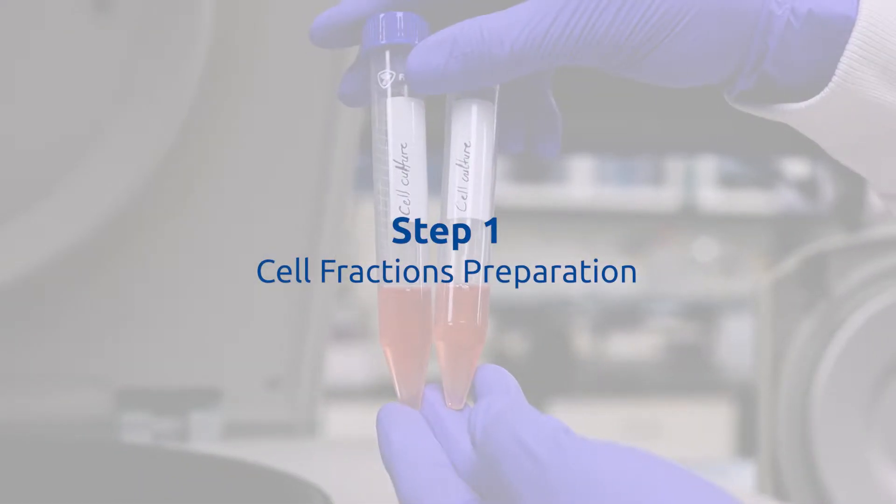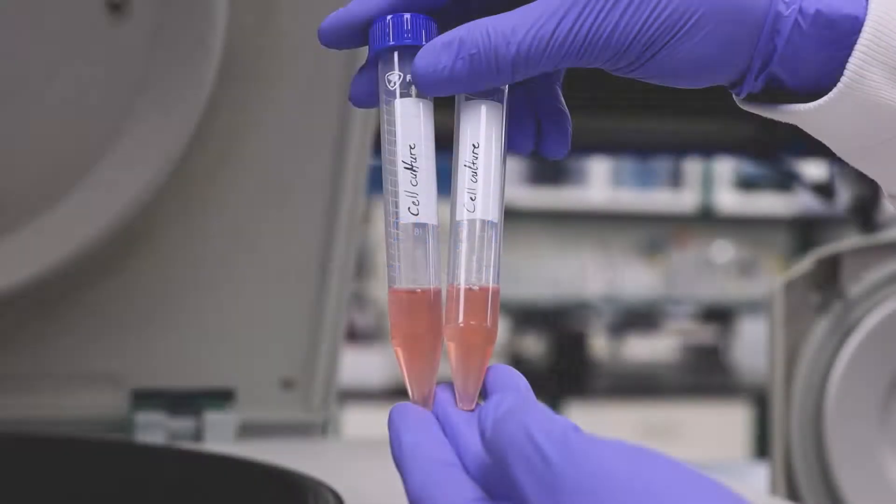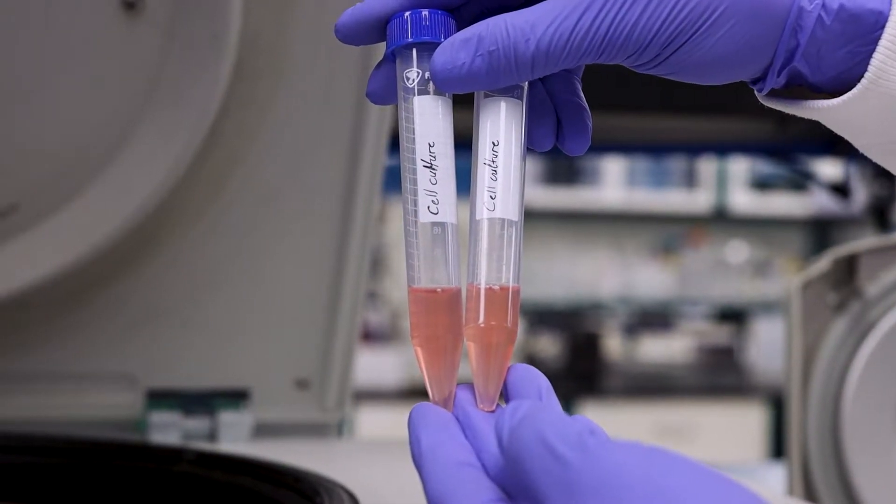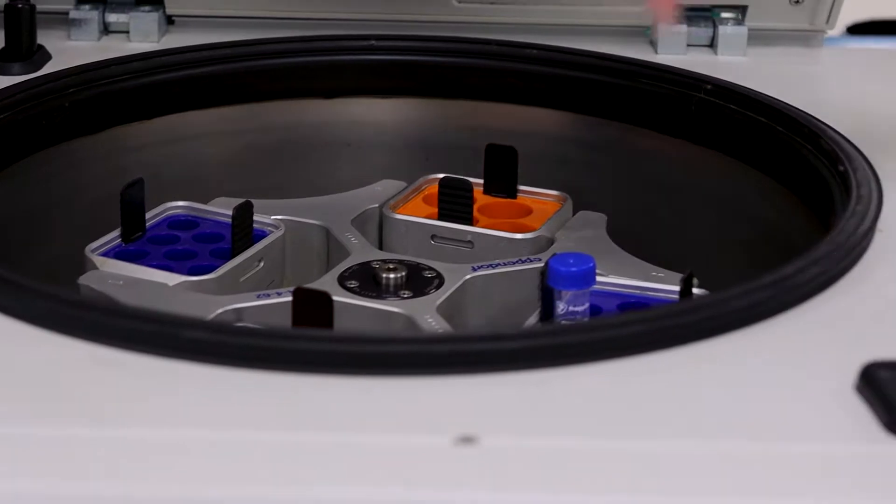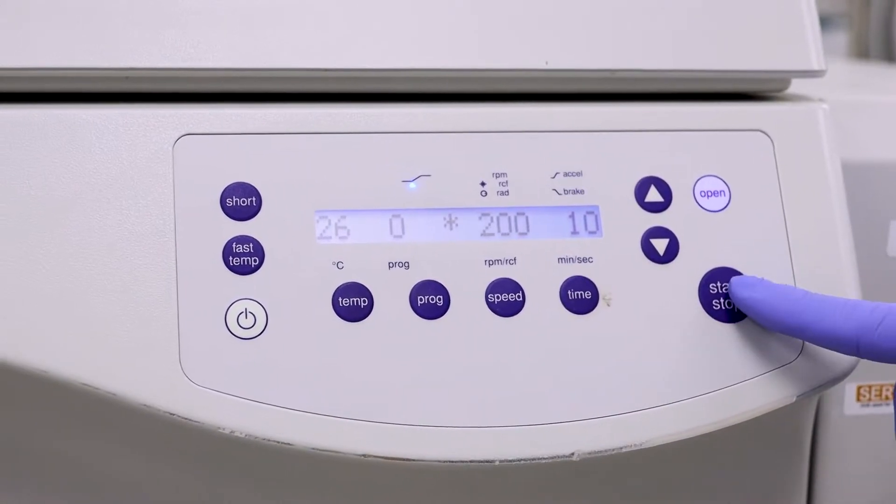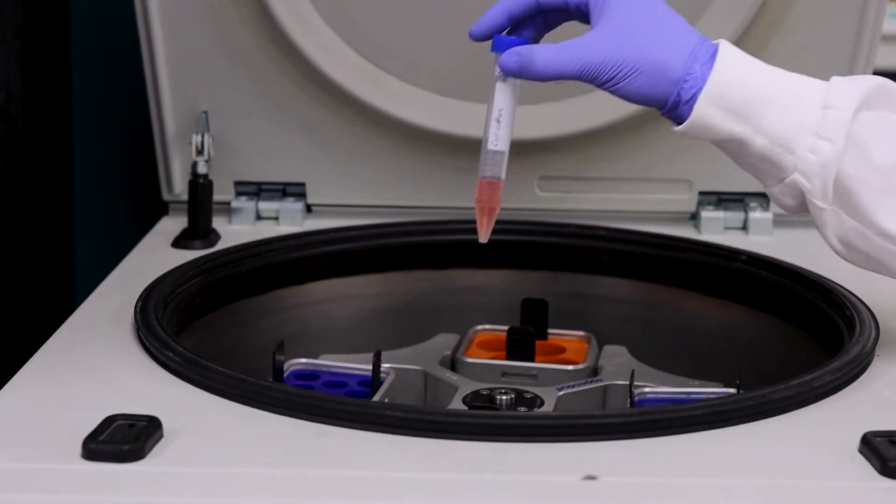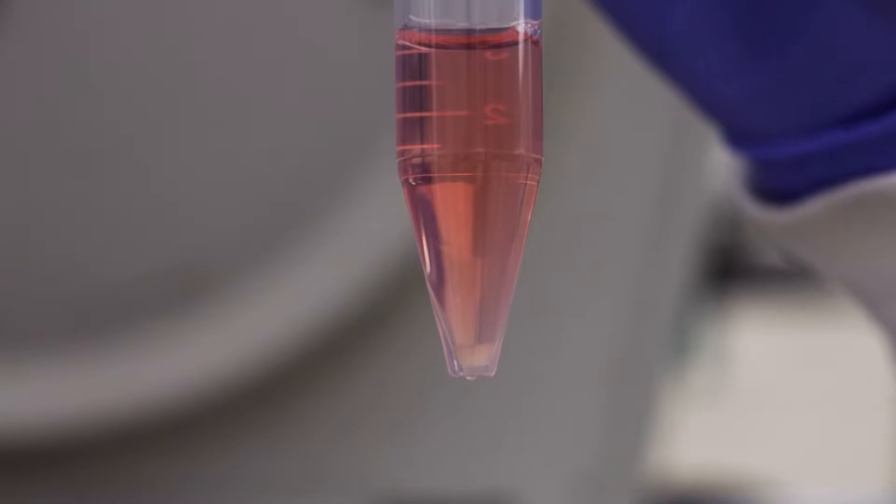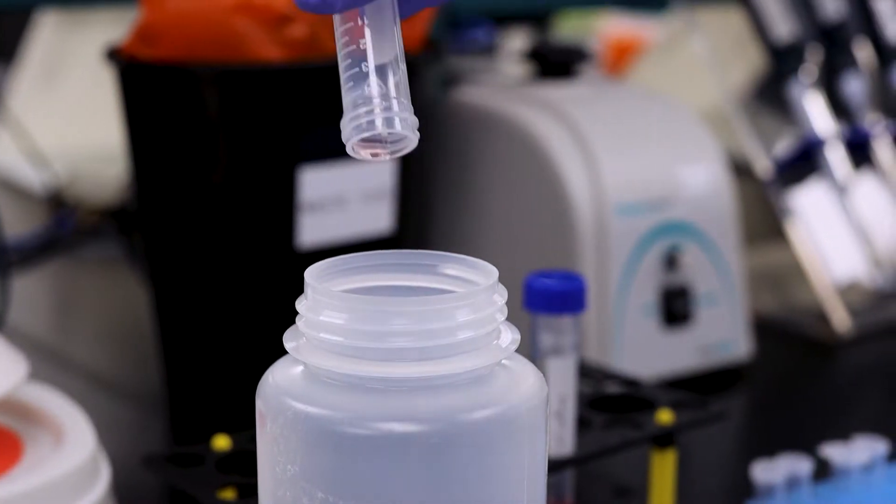Step 1. Cell Fractions Preparation. Transfer your cell suspension to an RNase-free tube, and centrifuge at no more than 200g or 2000rpm for 10 minutes to pellet the cells. Carefully decant the supernatant.